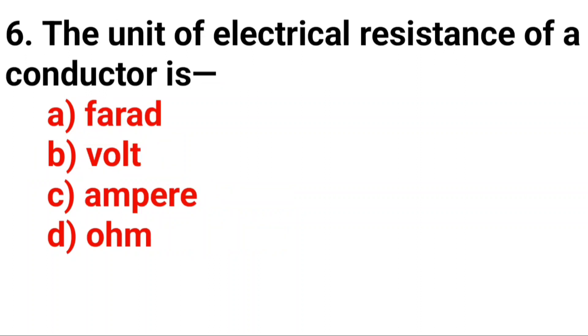Q6. The unit of electrical resistance of a conductor is. Option D: Ohm.